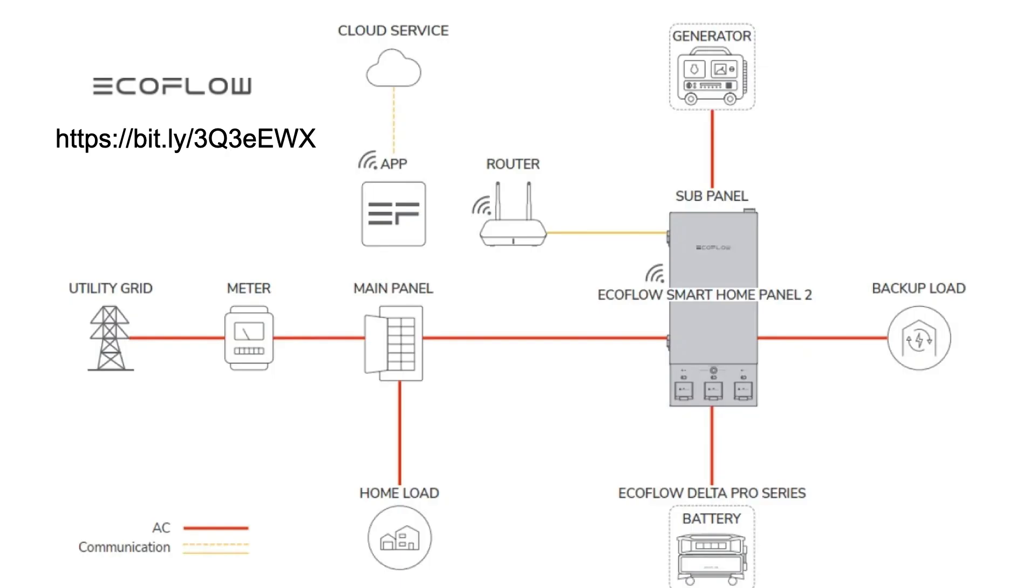The EcoFlow Home Panel 2 ties any and all of your standby power equipment together and will control them efficiently. It will even control your connection to the utility grid to make sure you're only using the least expensive power, switching to your standby power during those expensive time of use rates.